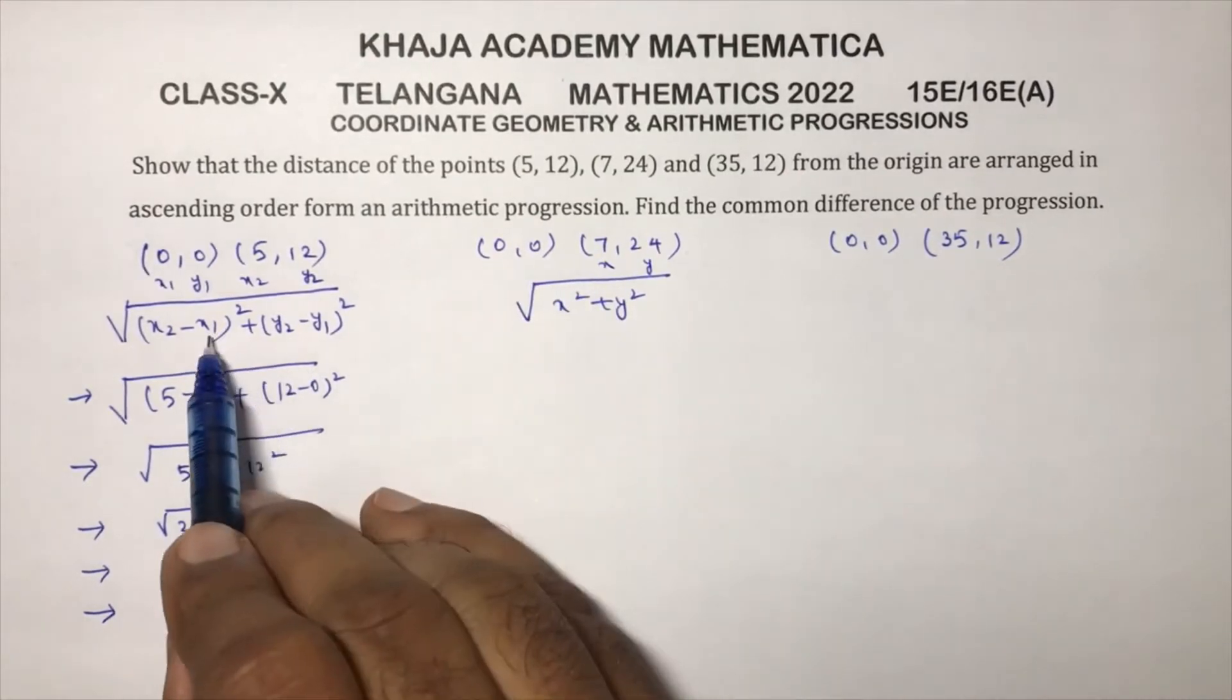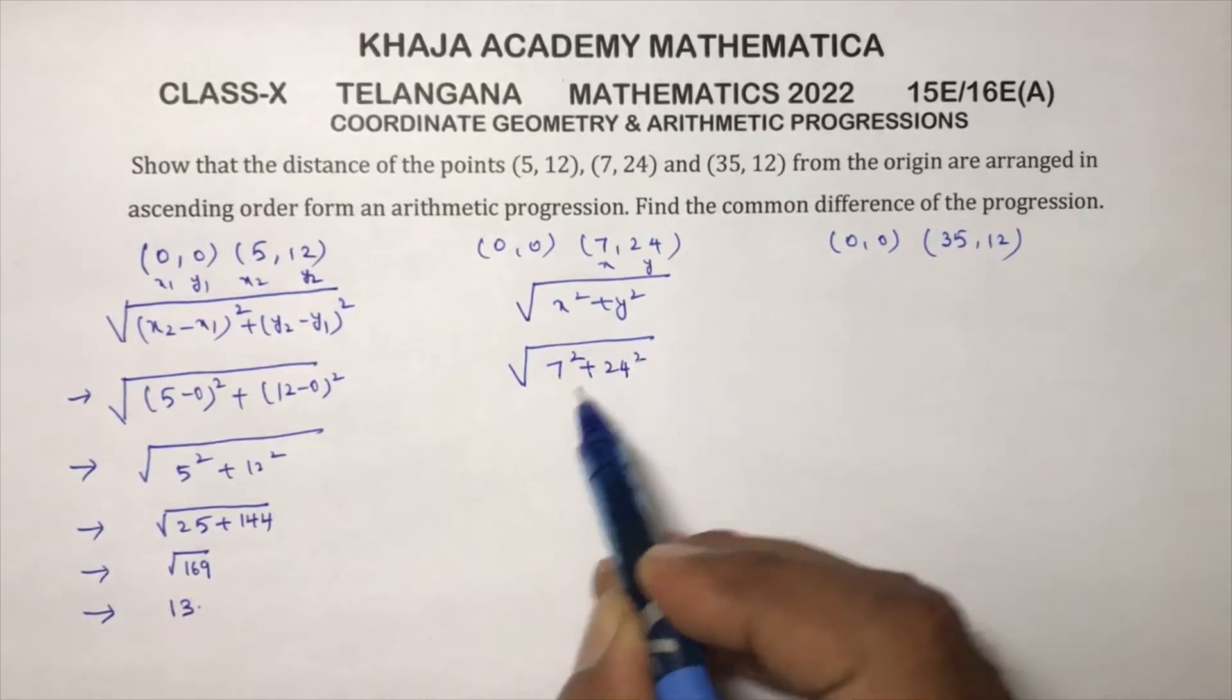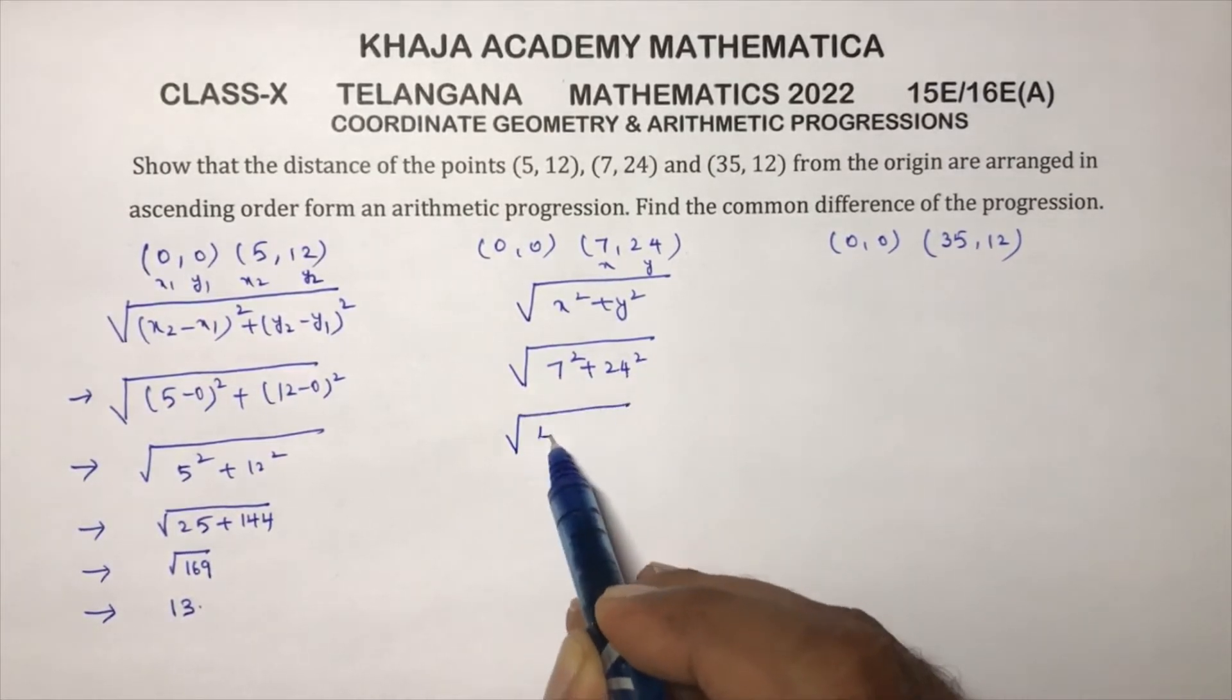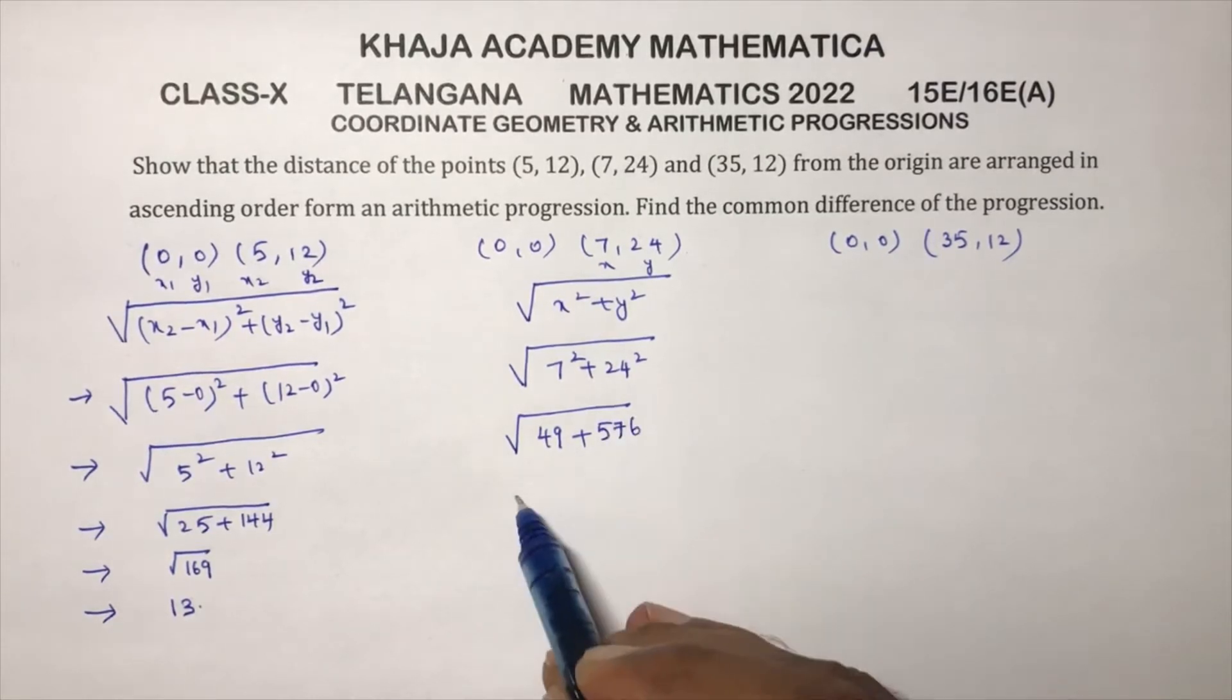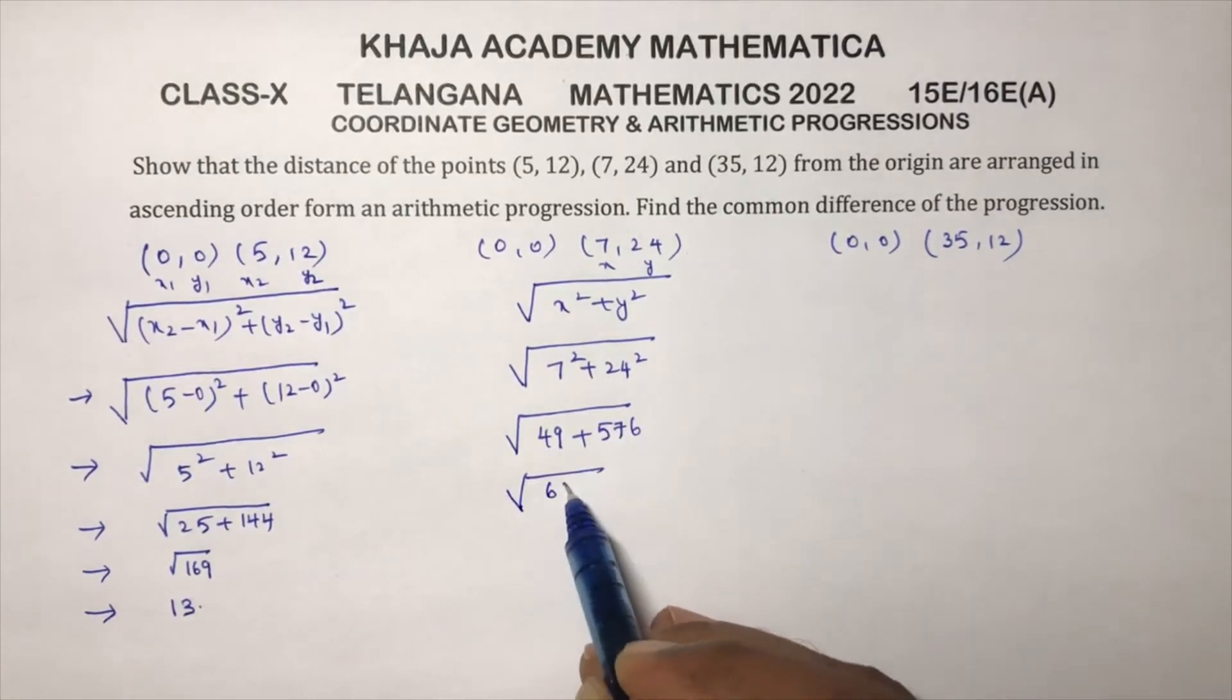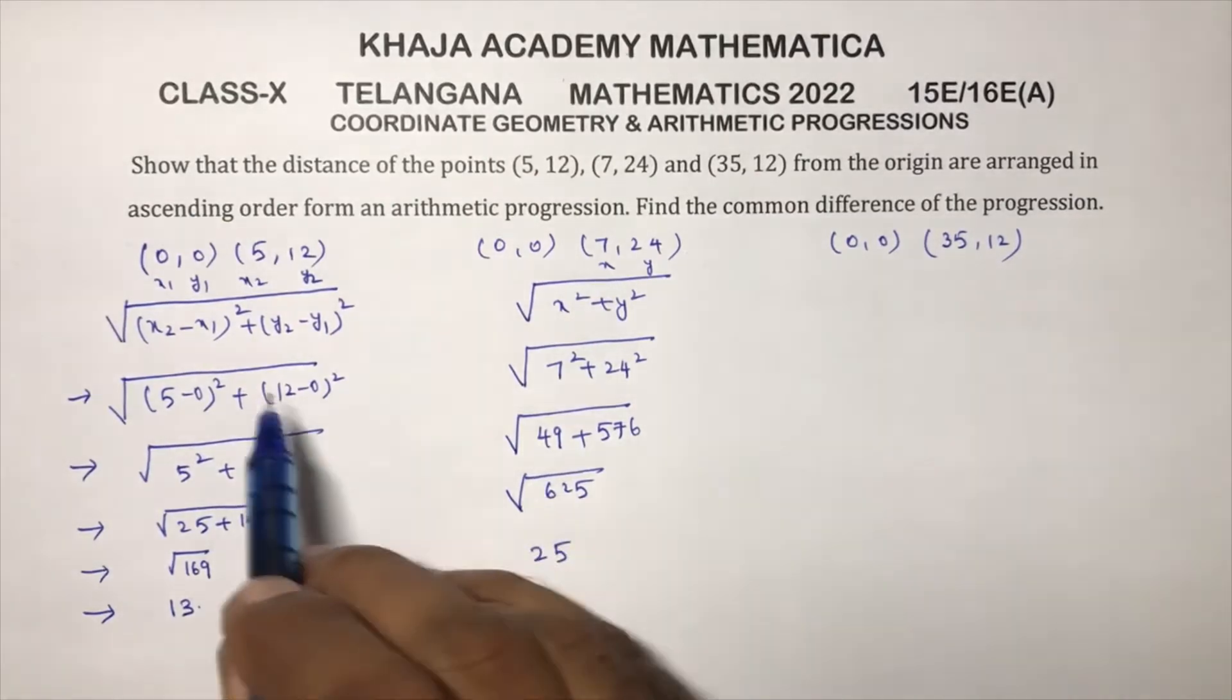So now see here, directly you'll get 7 square plus 24 square. 7 square is 49, 24 square is 576.